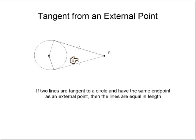Then that tells us that these two lines have to be the same. Or another way here, a little more compact, is if two lines are tangent to a circle and have the same endpoint as an external point, external means outside the circle, then the lines are equal in length.